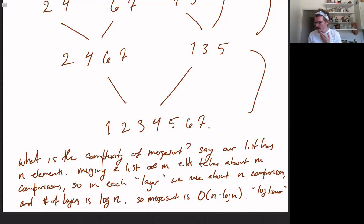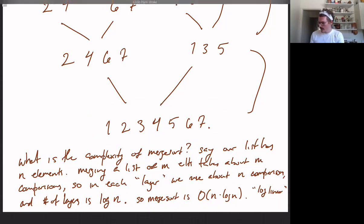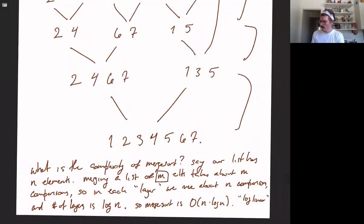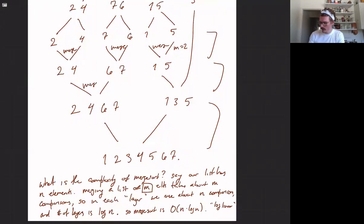Question: what is the difference between m and n? n is the letter used for the entire list. m refers to the fact that we do a lot of merges on smaller things. So for a merge at the bottom level, m equals 2; one level up, m equals 4; and the final merge has m equals n, because that's the full list. That's the difference between m and n in this explanation.